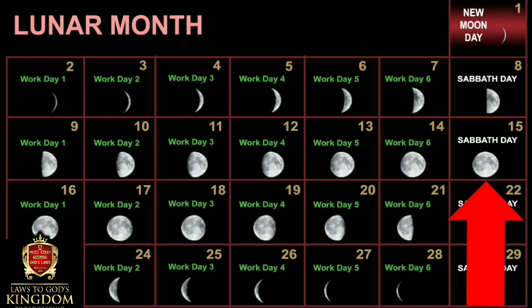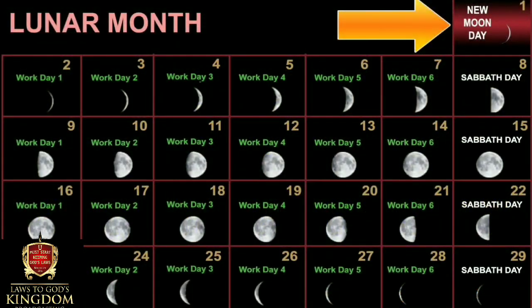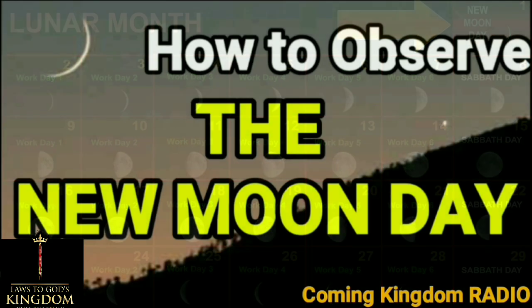To understand how to observe the New Moon Day, we can look at Nehemiah chapter 8, verses 1 to 12. On the New Moon Day, the people went to worship the Most High from morning until midday. They read from the Book of the Law and were being taught the Law. Please read Nehemiah chapter 8, verses 1 to 12, and you will see what they did on the New Moon Day.